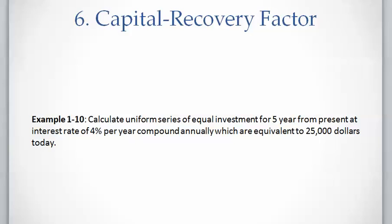Let's work on this example. We want to know the uniform series of equal investment for five years at an interest rate of four percent which are equivalent to twenty-five thousand dollars today. Let's say you want to buy a car today for twenty-five thousand dollars and you can finance the car for five years at four percent interest rate per year compounded annually and you want to know how much you have to pay each year.